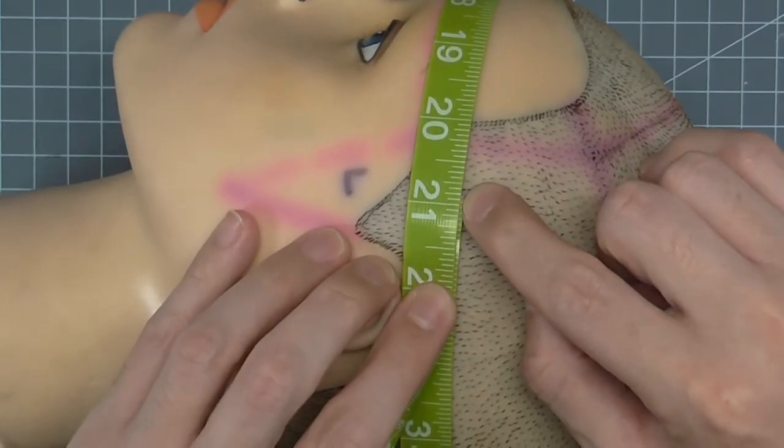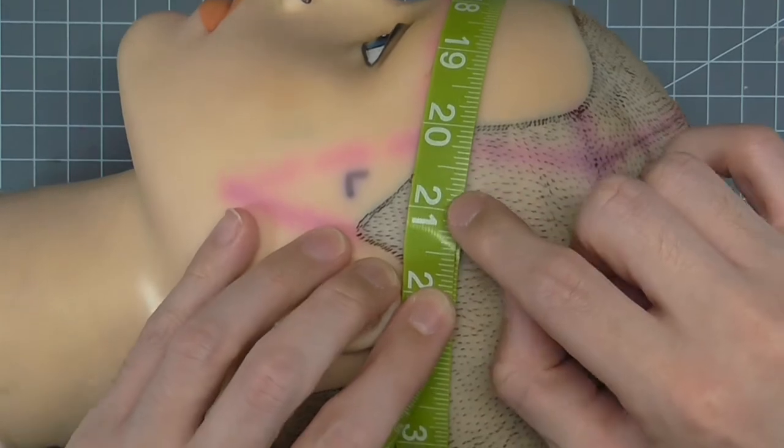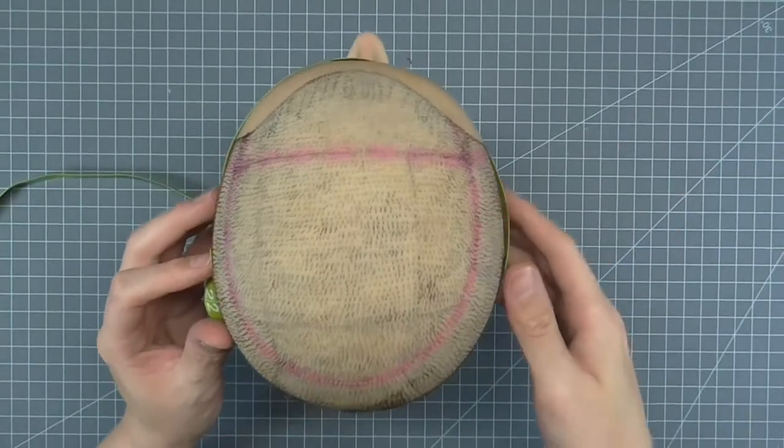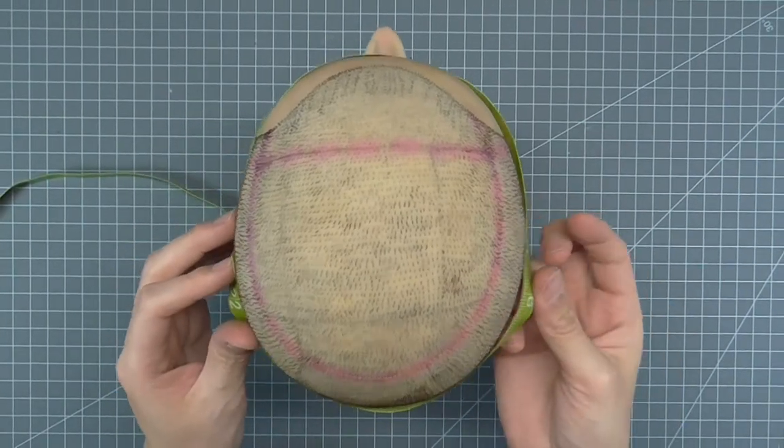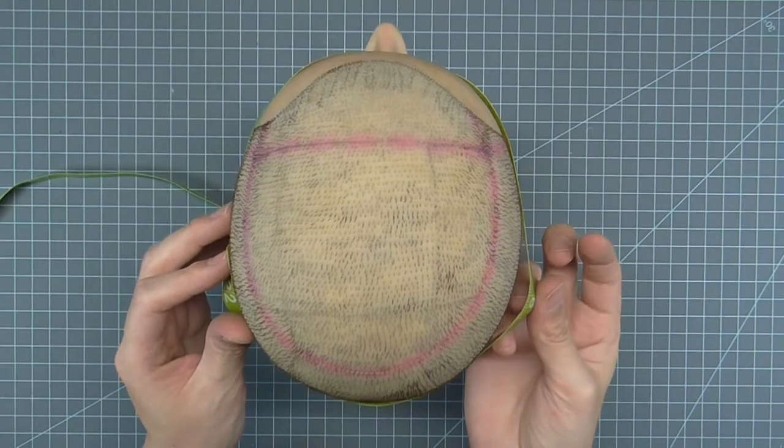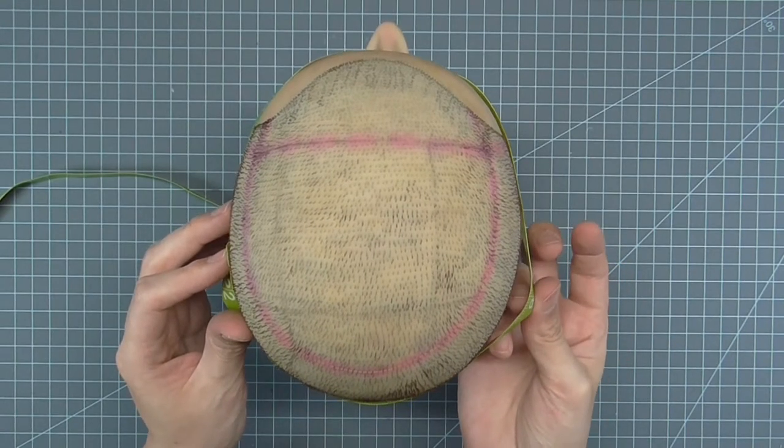My mannequin is twenty and a quarter, so adding a half inch ease will give me twenty and three quarters. You can see that there is plenty of room for physical construction of the hat. This way the head size does not constrict the head.